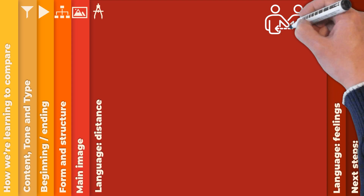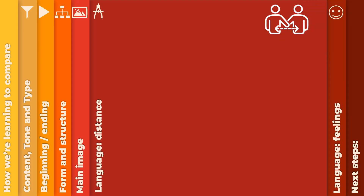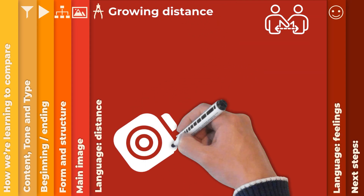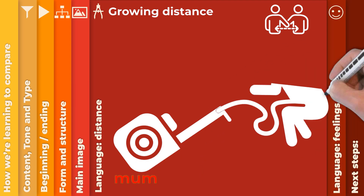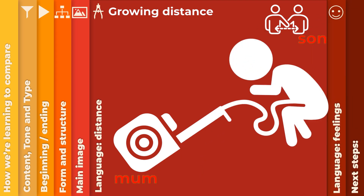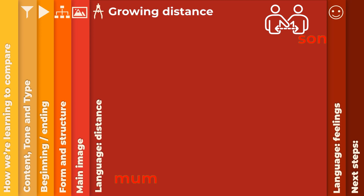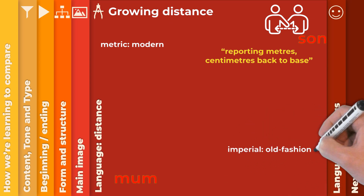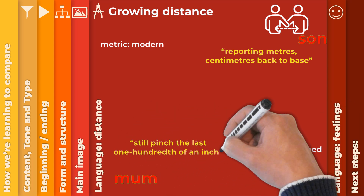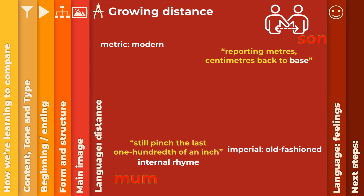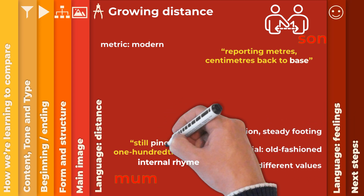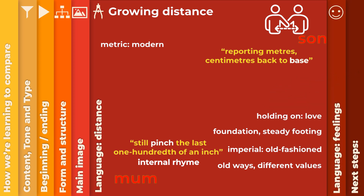Let's think about the way the language represents the distance between them — relationships are really about the metaphorical distance between people. We've established that the tape measure is an extended metaphor for the umbilical cord, and he's moving further away from her as the poem progresses. This poem deliberately uses distance to convey difference. When the speaker says 'reporting metres, centimetres, back to base', he measures in metric — the more modern unit — while she measures in imperial, as 'her fingertips still pinch the last one hundredth of an inch'. She's the base, the foundation, the steady footing, but she has old ways and different values. The word 'pinch' shows she's still holding on, even to the last degree, and that shows her love.